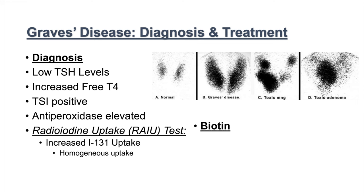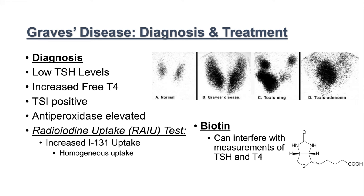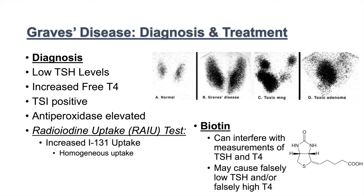One important diagnostic note: biotin supplementation has become popular for skin and nails, but it can interfere with measurements of TSH and T4. Individuals taking biotin supplements can have falsely low TSH measurements and falsely high T4 levels — making it look like hyperthyroidism or even Graves' disease. Some patients have actually been treated for Graves' disease unnecessarily. It is always important to ask patients if they are taking biotin supplements.